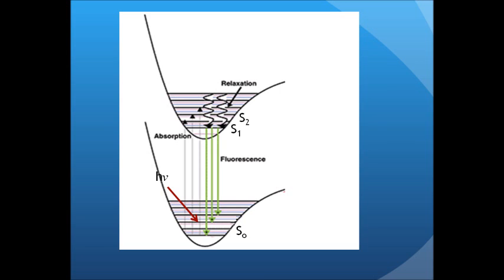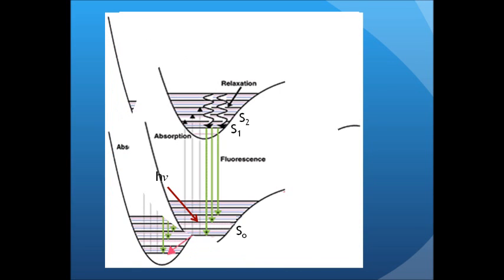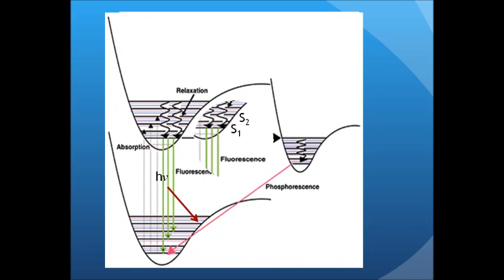However, the transition between the singlet and triplet state is forbidden, but there is the possible overlap of vibrational states of the singlet and triplet of a corresponding electronic state, denoted as inter-system crossing.